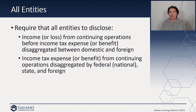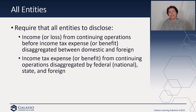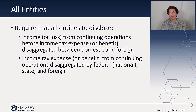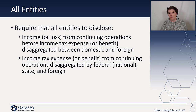In addition, you would have to disclose income or loss from continuing operations before income tax expense or benefit, disaggregated between domestic and foreign, and then income tax expense or benefit from continuing operations disaggregated between federal, national, state, and foreign. So they want you to break this down so that we have all of the information in order to do both the cash basis and the tax basis.